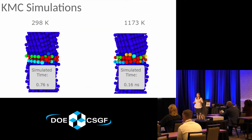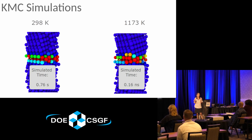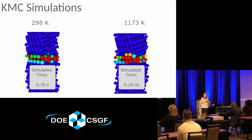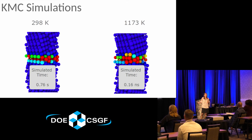To give you an idea of how powerful this method is — particularly at low temperatures — in a room-temperature simulation we can physically simulate on time scales on the order of a second, whereas at high temperatures we're looking at around 0.1 nanoseconds. If we're interested in low-temperature physics — where molecular dynamics can already access higher-temperature physics — we can look across nine orders of magnitude in time scale to access the physically relevant kinetics with this method.